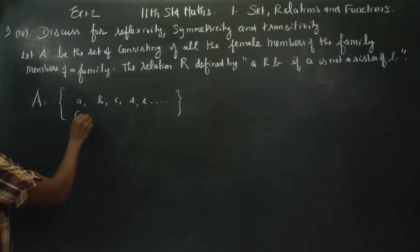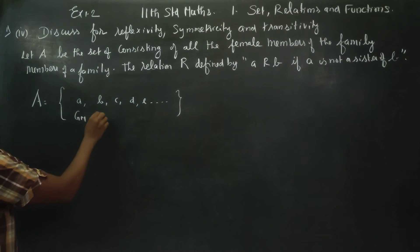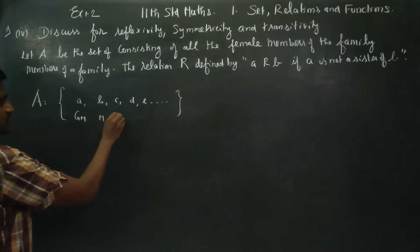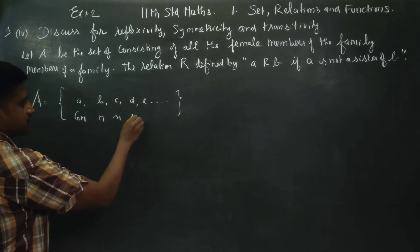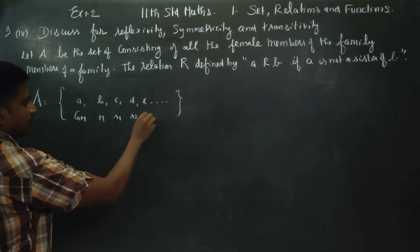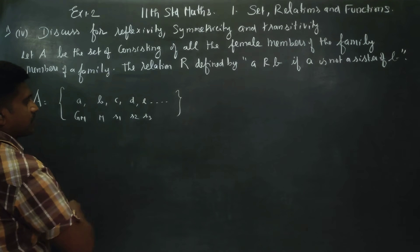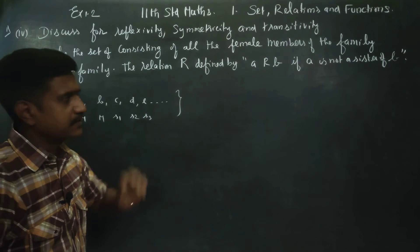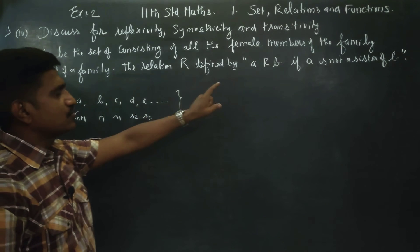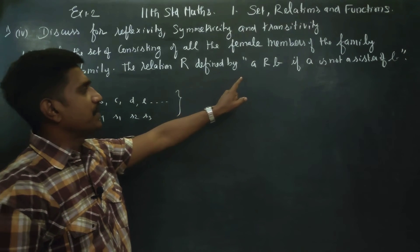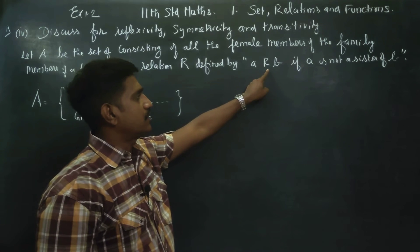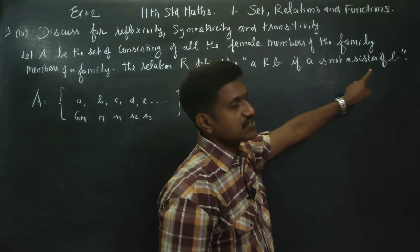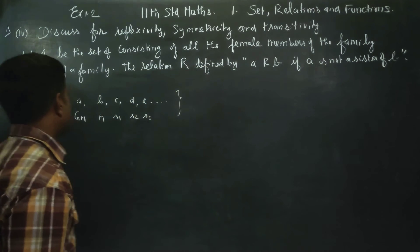For example, the members are: grandmother, mother, sister, sister, sister. What is the relationship used? The relation is 'is not a sister of.'